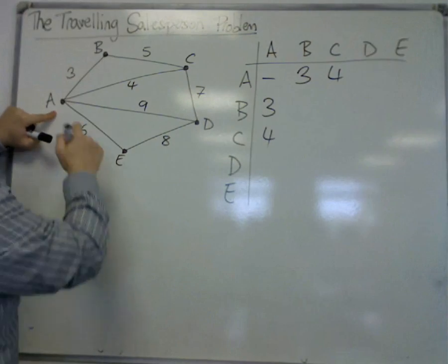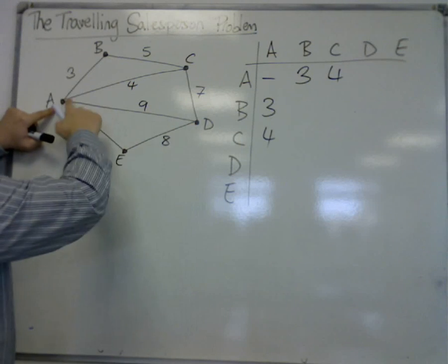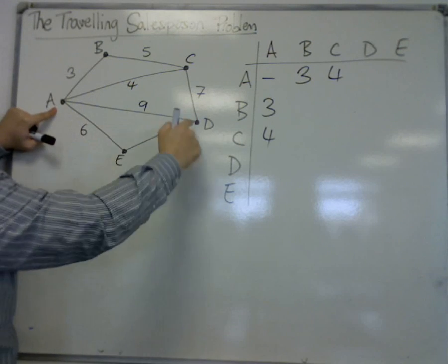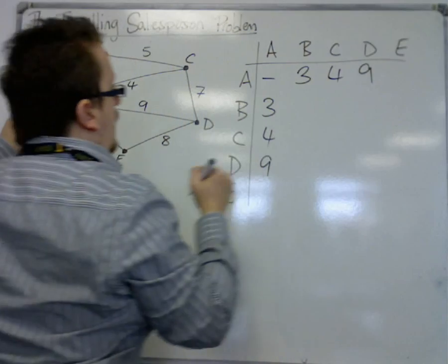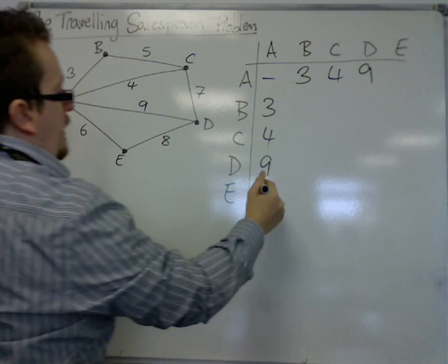A to D could be 9. There's 11, there's 14, so it's 9. A to E is 6.